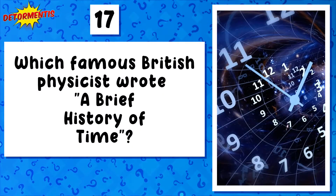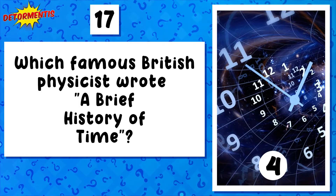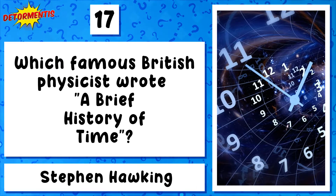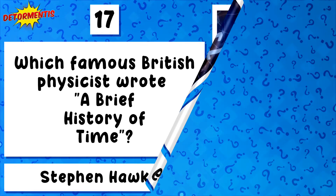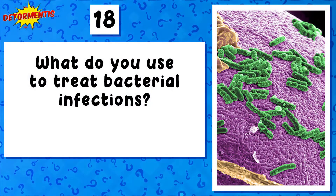Question 17. Which famous British physicist wrote A Brief History of Time? Stephen Hawking.